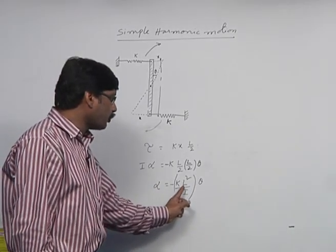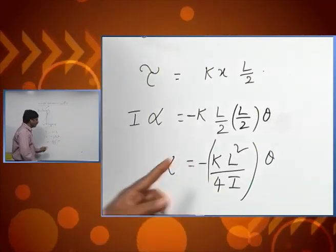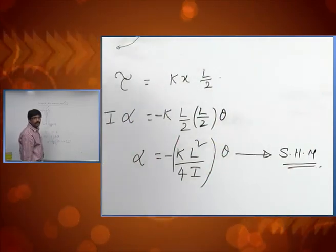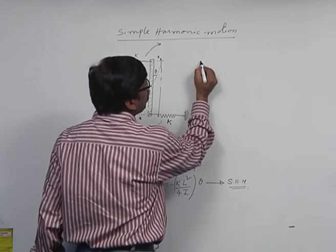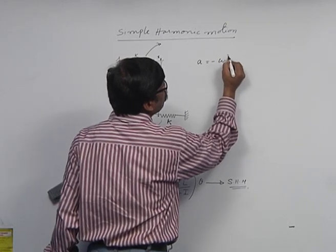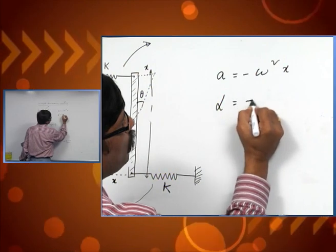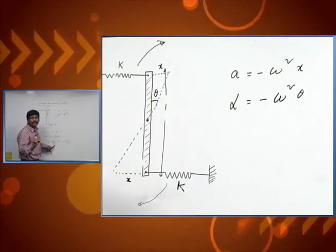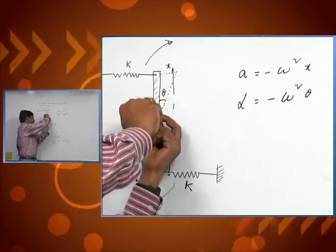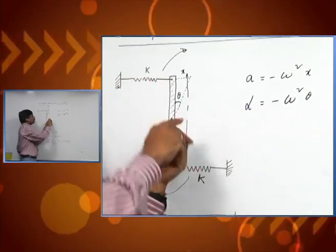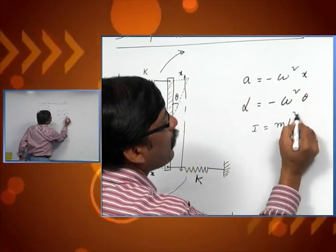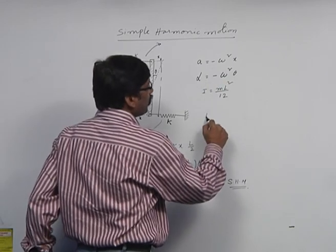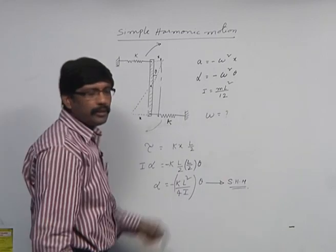The angular acceleration is directly proportional to angular displacement and directed opposite to it — this is the condition for simple harmonic motion, which we can call angular simple harmonic motion. Using the relation alpha equals minus omega squared theta, we get omega squared equals k·L² / (4I), where I is the moment of inertia of the rod about its central axis. Since the axis passes through the center, I equals M·L² / 12. Substituting this, we can find the angular frequency of the oscillatory motion.